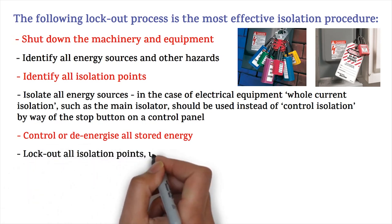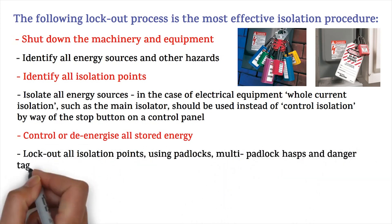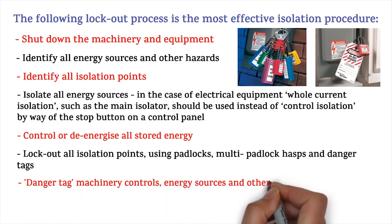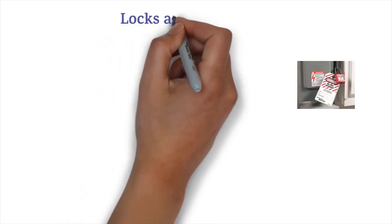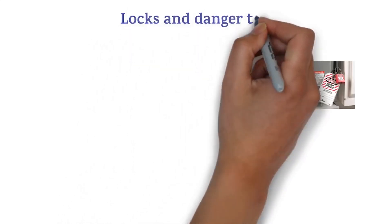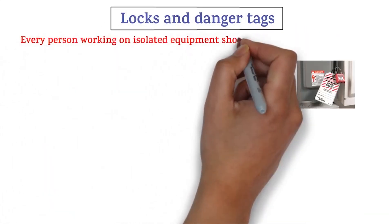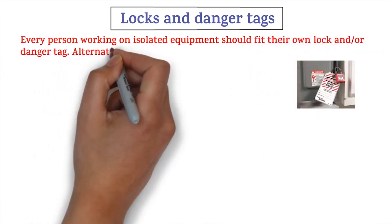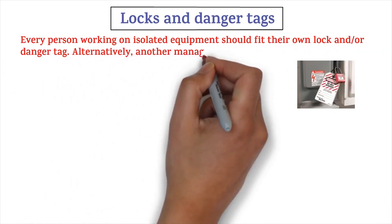Control or de-energize all stored energy. Lock out all isolation points using padlocks and multi-padlock hasps, and apply danger tags to machinery controls, energy sources, and other hazards. Every person working on isolated equipment should fit their own lock and/or danger tag.